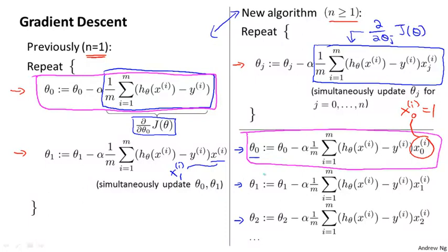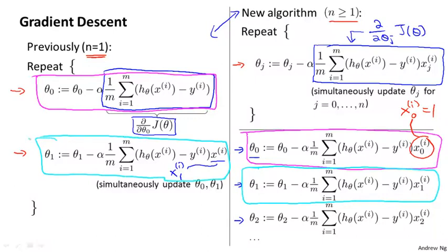Similarly, if you look at the update rule for theta 1, you find that this term here is equivalent to the term we previously had, or the update rule we previously had for theta 1, where we're just using this new notation, x subscript 1, to denote the first feature. And now that we have more than one feature, we can have similar update rules for the other parameters, like theta 2, and so on.